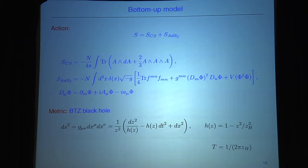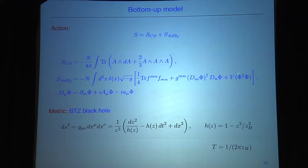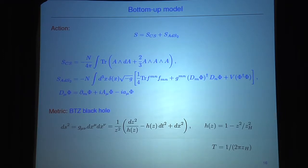The bottom-up model has the following structure: it involves a Chern-Simons action in AdS_3 and a two-dimensional action in AdS_2, with a Chern-Simons term and this AdS_2 term having the 2d gauge field and the complex scalar. We choose the potential to just be a mass term at the Breitenlohner-Freedman bound for simplicity, and the covariant derivative involves both the three-dimensional and the two-dimensional gauge field. We use the probe limit and study a BTZ black hole as given by this metric.